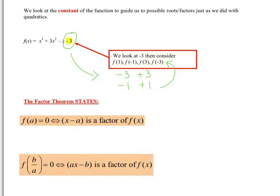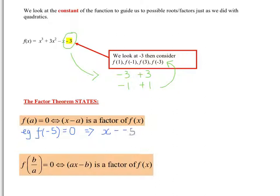The formal factor theorem states that if f of a equals 0, then x minus a is a factor of f of x. For example, if f of minus 5 equals 0, you should be able to say that x minus minus 5, which in fact is x plus 5, is a factor of f of x.